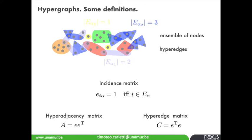You can encode the hypergraph using the incidence matrix E_i,α whose element is 1 if and only if node i belongs to hyperedge α, otherwise zero. From this matrix one can construct the hyper-adjacency matrix A, where A_ij is the number of hyperedges containing both nodes i and j.